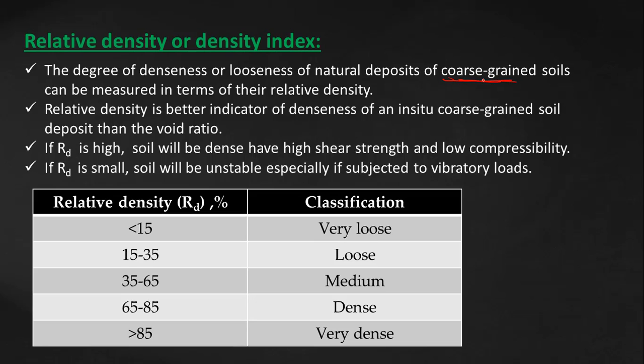Relative density is a better indicator of denseness if we compare with void ratio. If relative density, denoted by Rd, is high, it means that soil will be dense and have high shear strength and low compressibility.